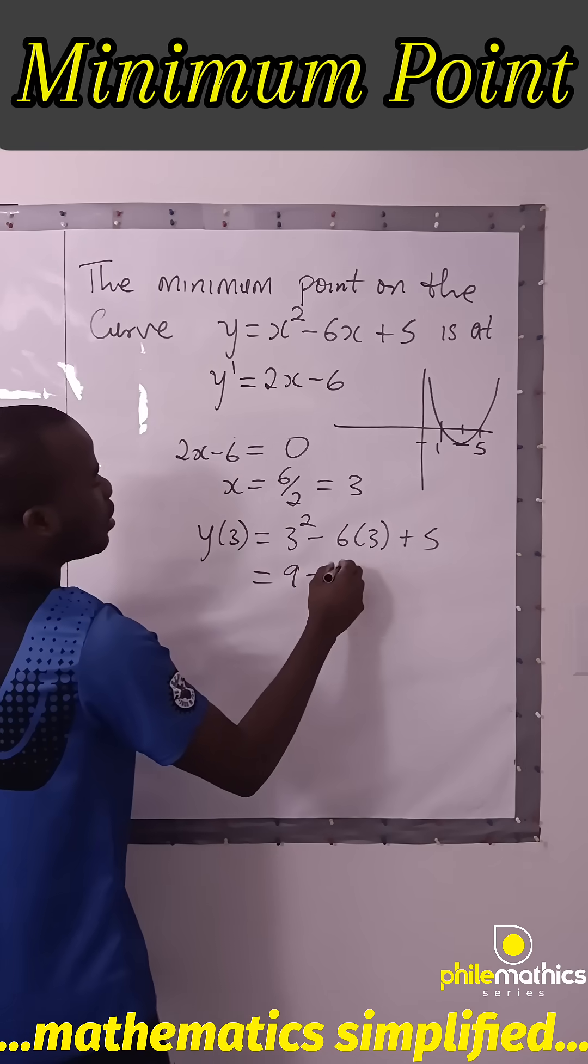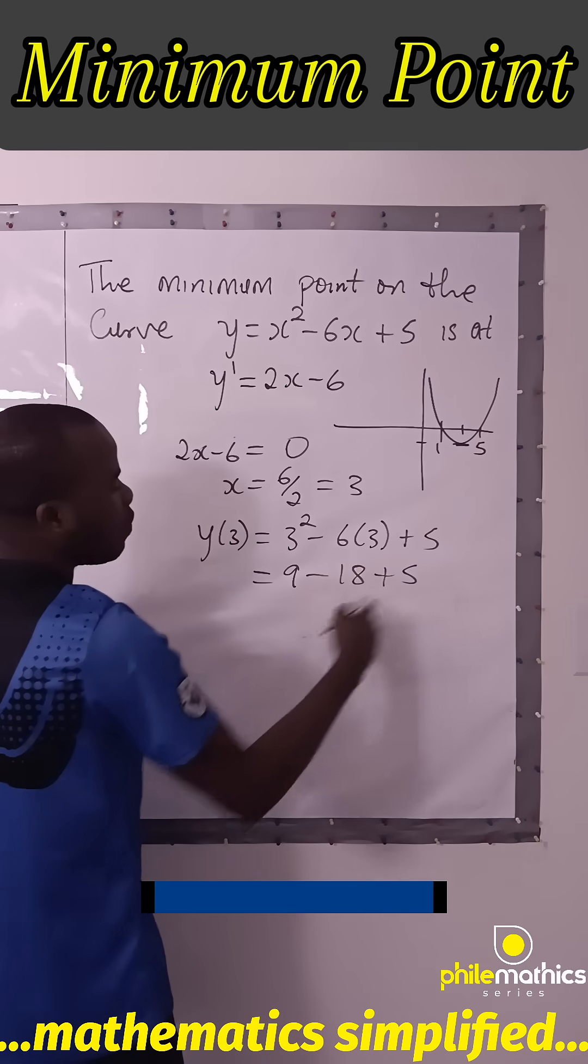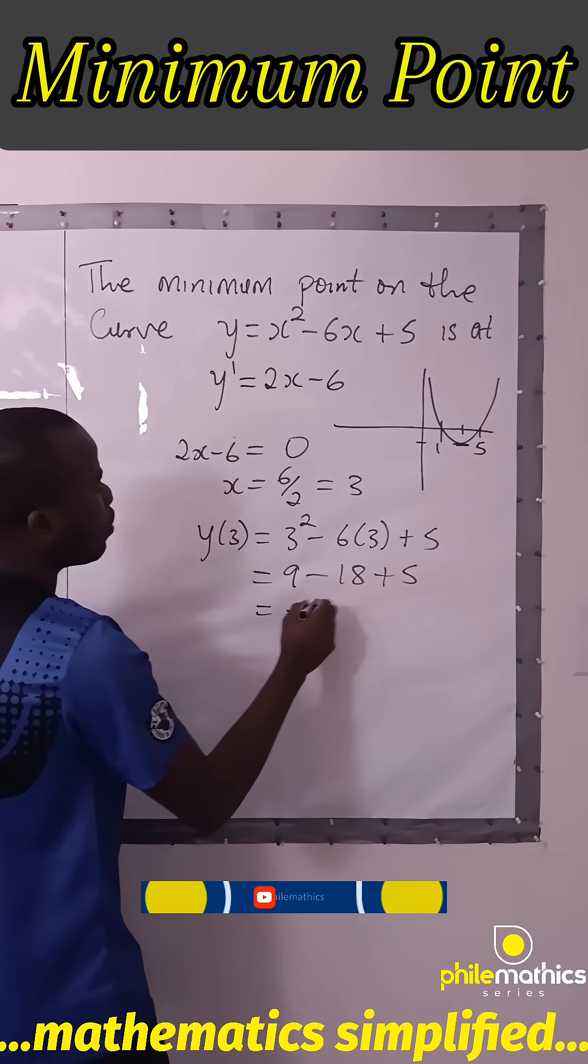3 squared is 9, this is 18 plus 5. 9 plus 5 is 14, and 14 minus 18 is minus 4.